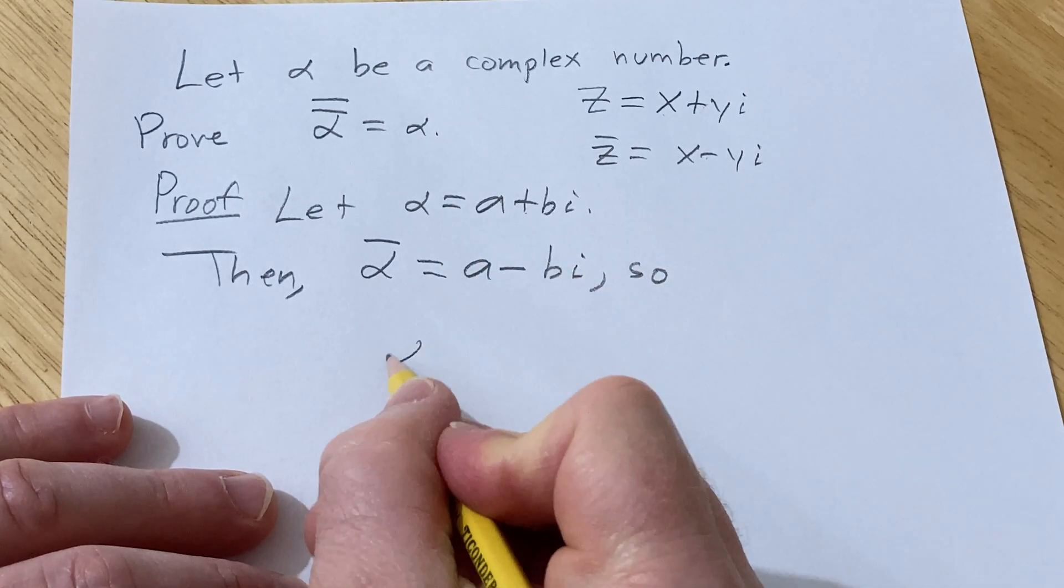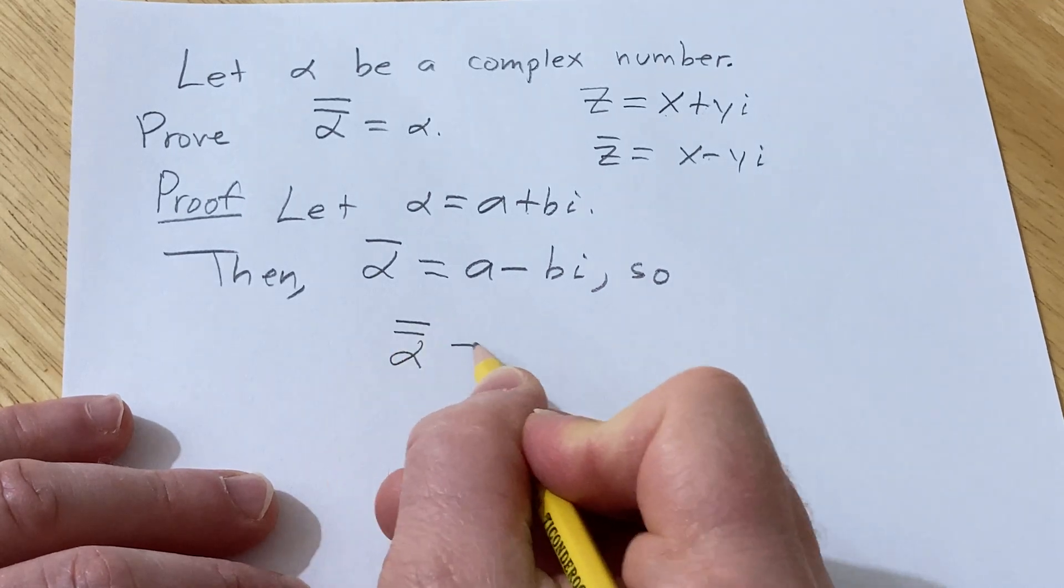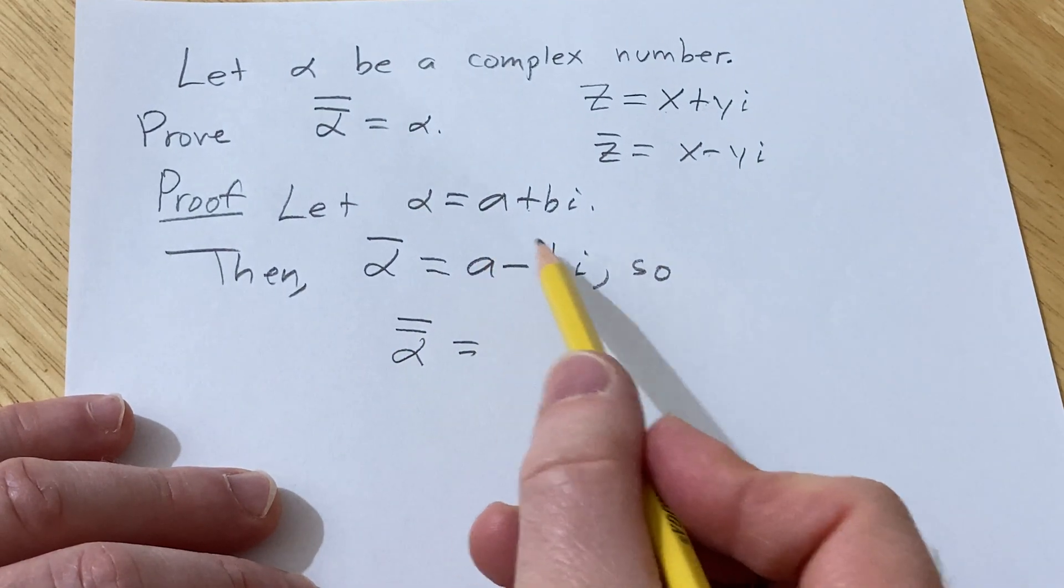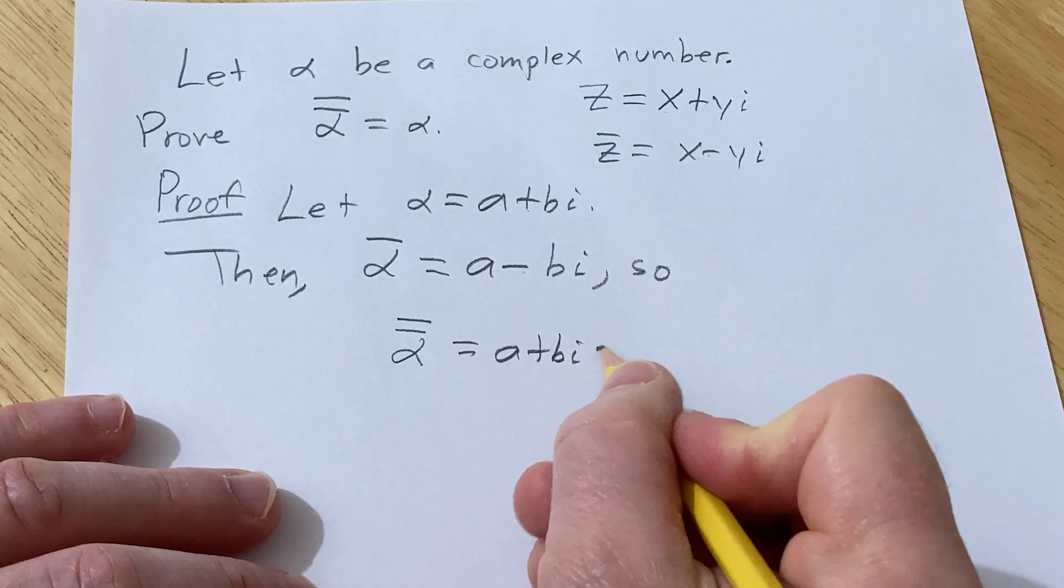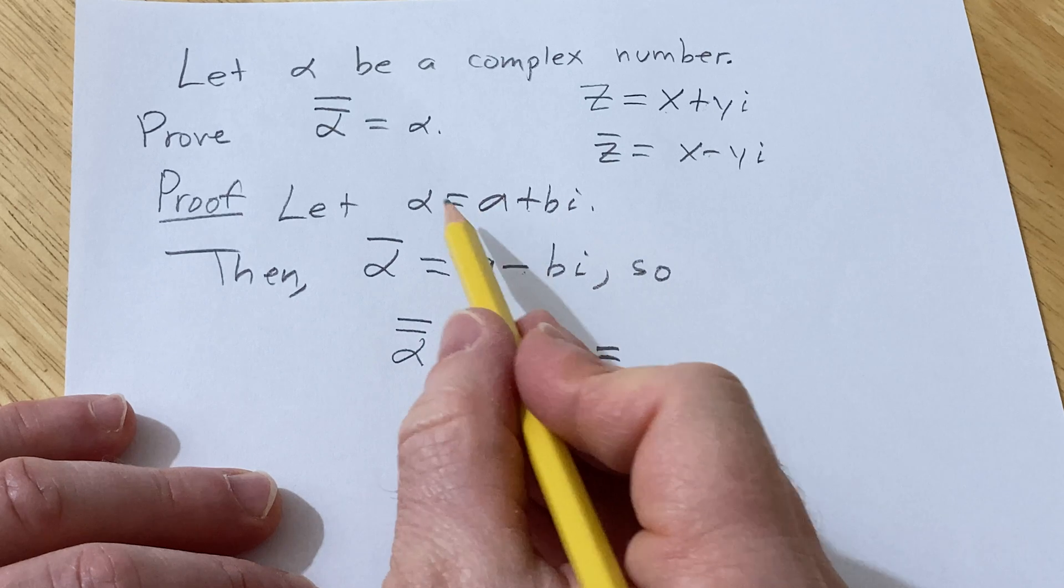So if we take the conjugate of the conjugate we basically now we look here and we switch the sign, right, so that's going to become a plus. Oh but look that's what we started with, that's alpha.